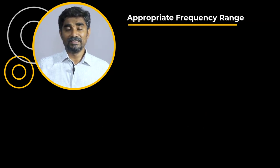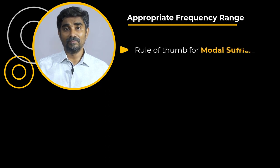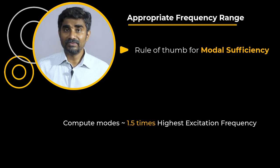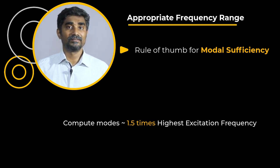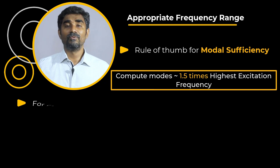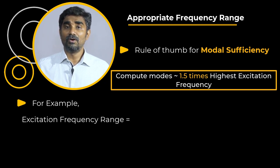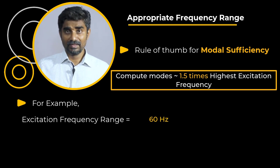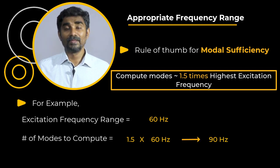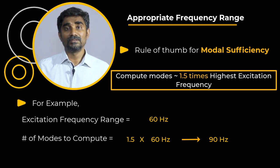The first guideline is to identify the appropriate frequency range. The rule of thumb for model sufficiency is to compute modes up to 1.5 times the highest frequency in the excitation frequency range. However, it is not a hard and fast rule, but just a recommendation. For example, if the excitation frequency range of any mechanical system is 60 Hz, then the modal analysis should compute modes up to 1.5 times this frequency, which would be 90 Hz. This would ensure that enough modes get computed to capture the accurate structural response of the system.